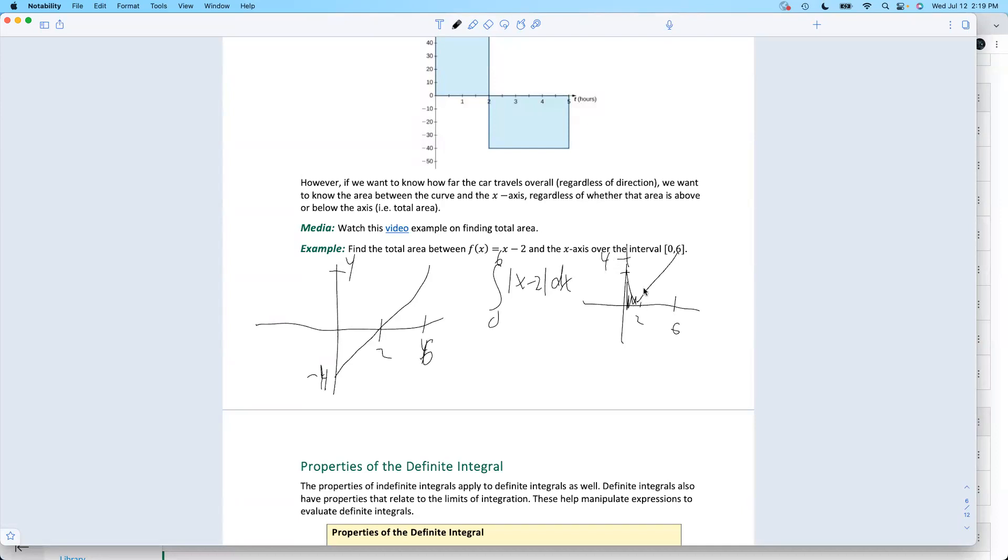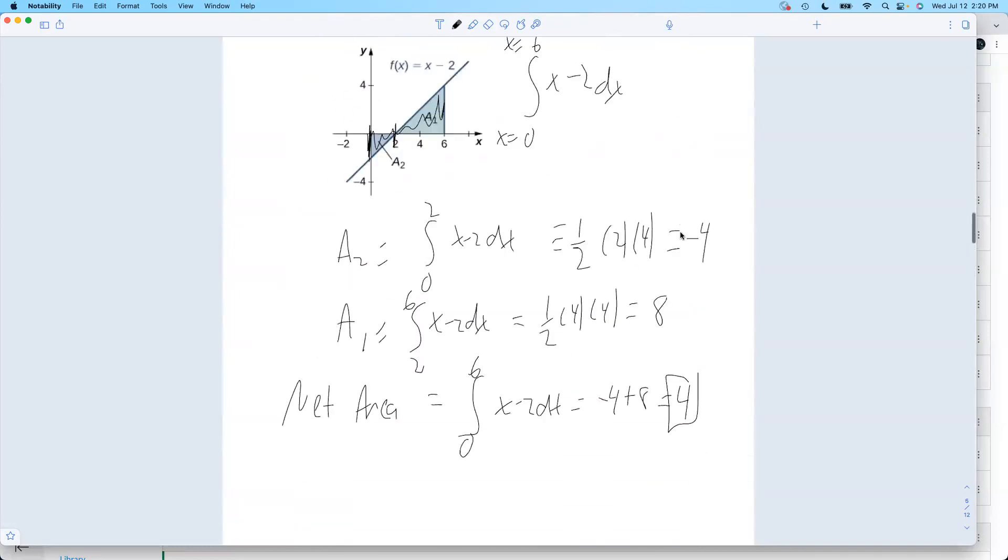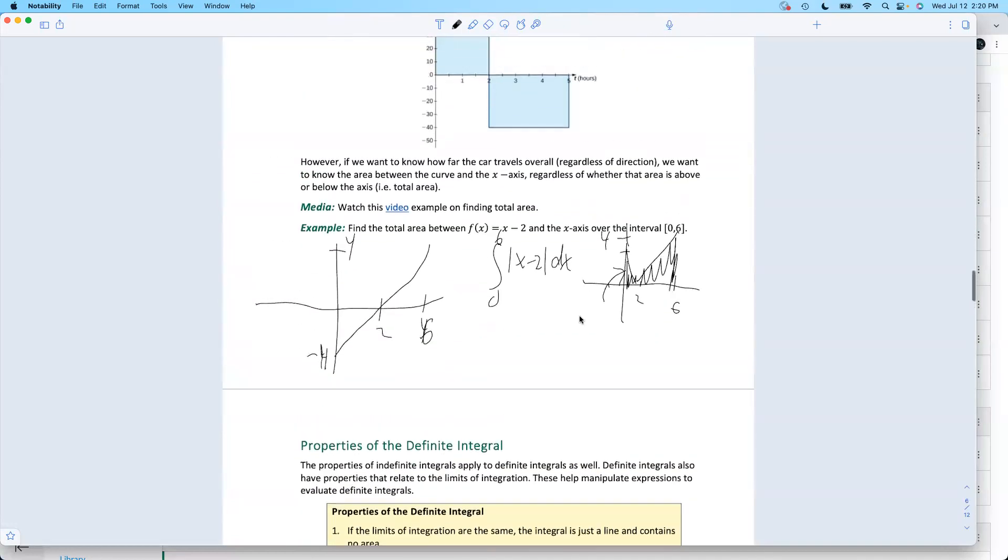So now I want all of this positive area. So that chunk in here, negative four, same answers we got before, negative four and eight, but now everybody's positive. This guy right here, this triangle, his area is four. This triangle, his area is eight. The total area is 12 square units.